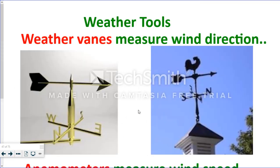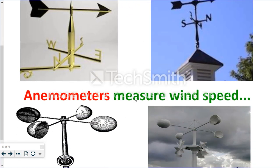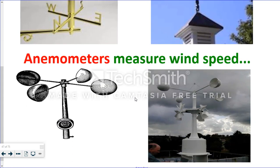A couple of weather tools that we use to measure these weather conditions are weather vanes. We see these on buildings of all types, and they measure wind direction. The next type is an anemometer. Scientists use this to measure wind speed.